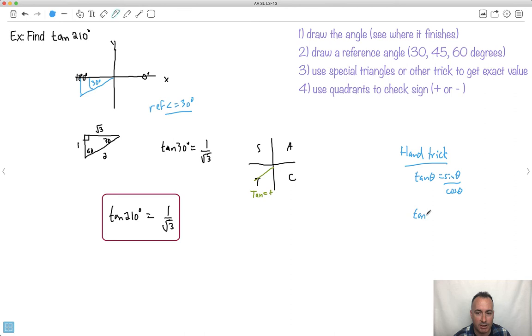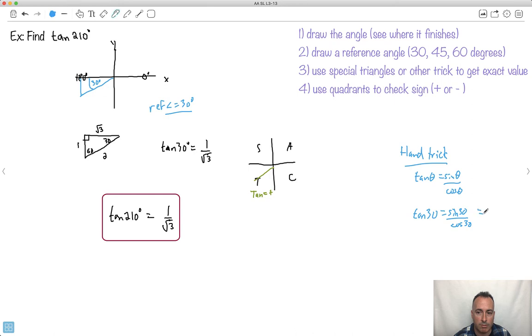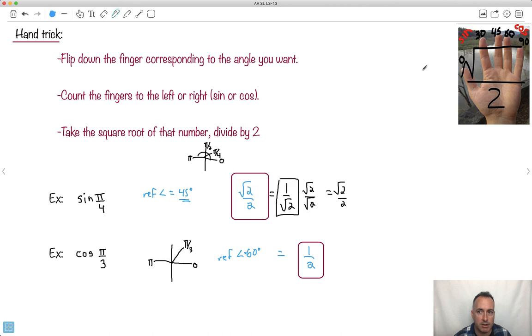You have to use this identity that we learned that tan theta is sine theta over cos theta. Because then you'd know that tan 30 is sine 30 over cos 30. What's sine 30? We need cos 30. I hide that finger there. It's going to be 1 over 2. So it's going to be 1 half here.